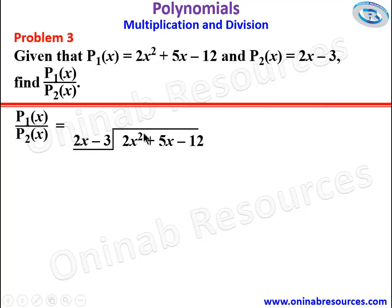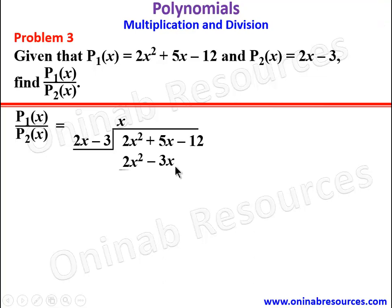The method of dividing is straightforward and simple. We will only be concentrating on the first term and this first term. So here we concentrate on 2x squared divided by 2x, which gives us x. So we have x there. We now use this quotient to multiply every term of the divisor. So x times 2x gives 2x squared, and x times negative 3 gives negative 3x. Then we subtract: 2x squared minus 2x squared is gone. Now 5x minus negative 3x is 5x plus 3x, since negative times negative gives positive, and our answer there will be 8x.